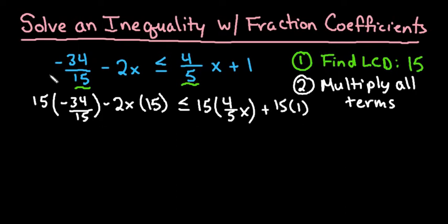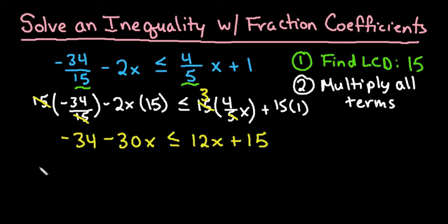So now we would simplify everything. For the first part, the 15s would cancel out and I'm just left with negative 34. Negative 2 times 15 gives me negative 30x. 15 divided by 5 is 3, and then I would take the 3 times 4 which would give us 12x, plus 15 times 1 gives us 15.